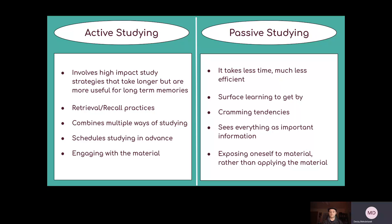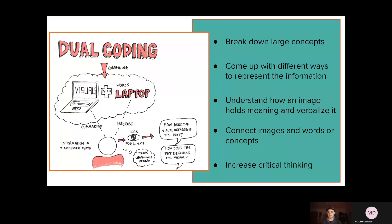One active studying strategy that's really good to know, and kind of comes from the science of learning, is the concept of dual coding — that's the idea of intaking information in multiple forms. So if you were going to learn, like this example shows, what a laptop is and what it does, you would combine your notes about what a laptop is with an image that you draw demonstrating what a laptop actually looks like and how you interact with it. Just the act of having those two connections to the information, both visual and textual, make it a lot easier to recall because your brain has more connections to it.